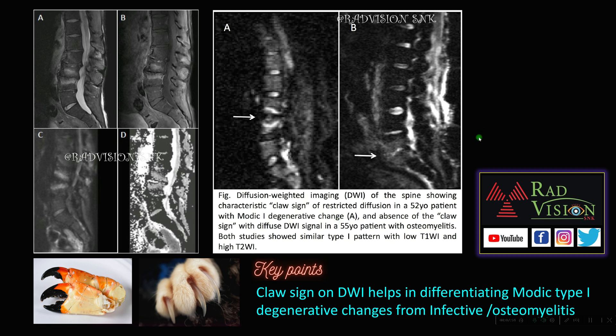Modic type 1 changes are low on T1 and high on T2; similarly, infection will also be low on T1 and high on T2. So the CLASS sign helps in differentiating Modic type 1 changes from infective or osteomyelitis causes.